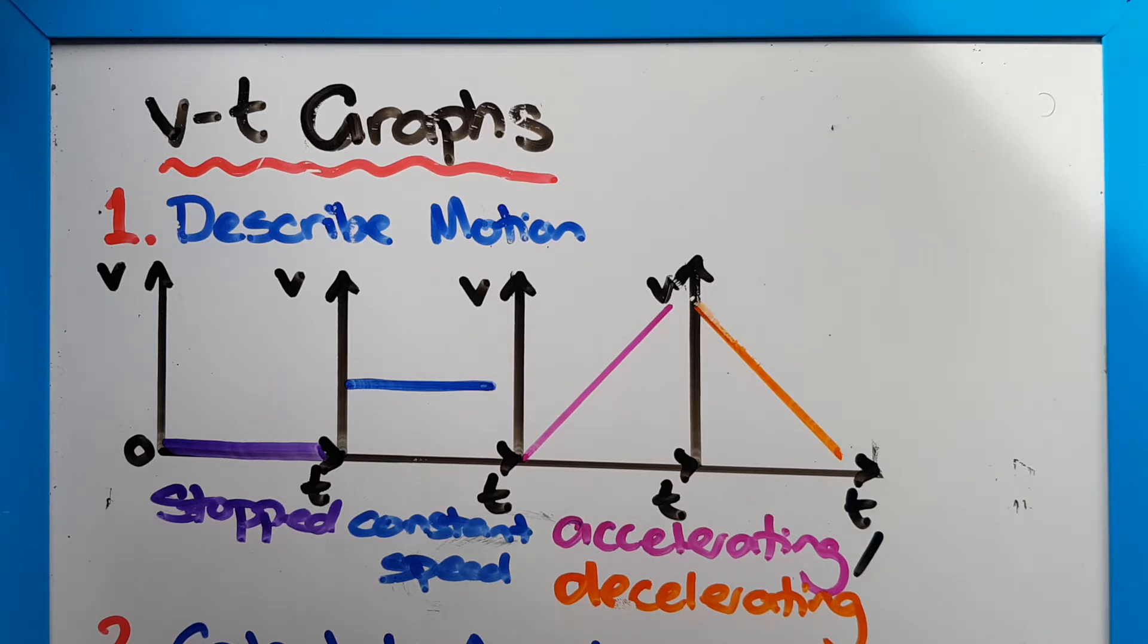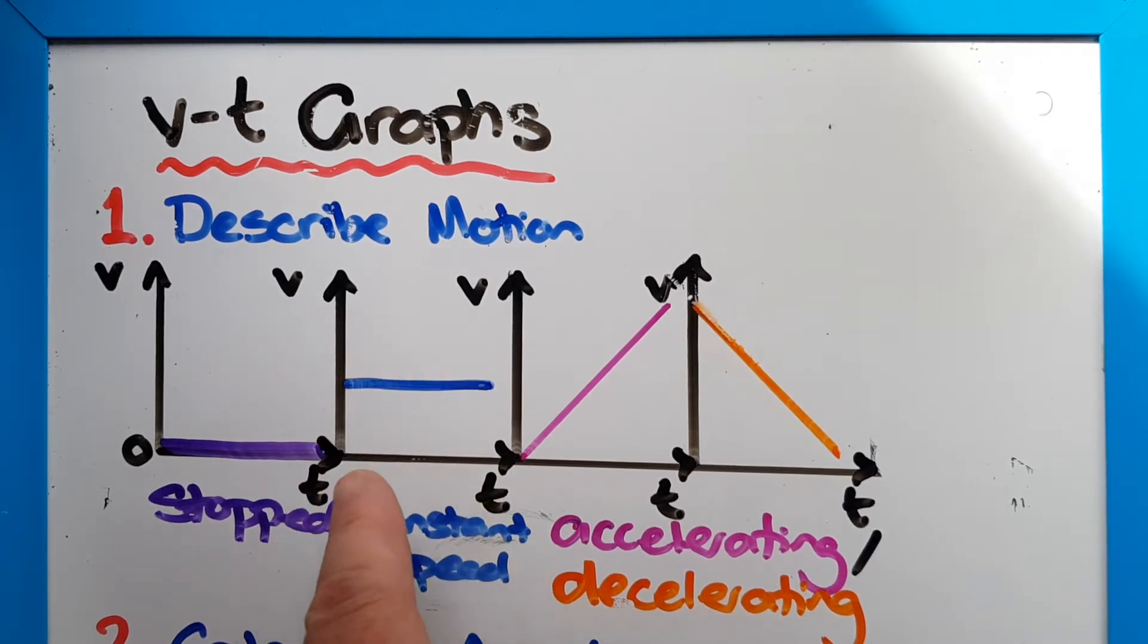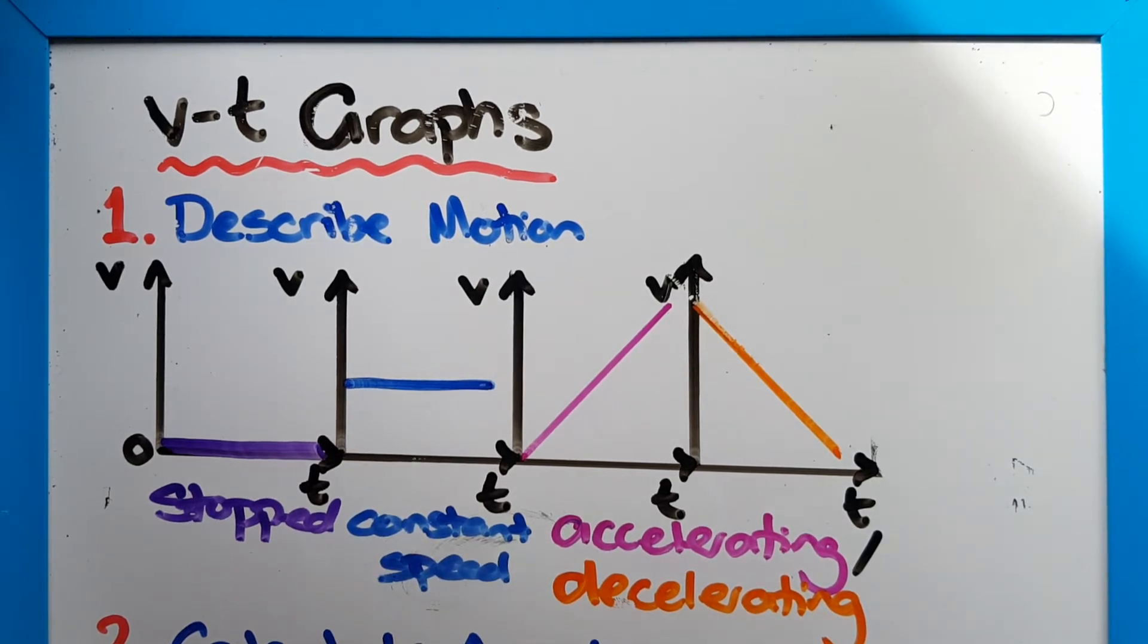So we normally have speed on our y-axis, the up and down, and our time on the x-axis, so across. If we see that the line is along the x-axis it means there is no speed, so we describe that motion as stopped or stationary. If it's parallel to the x-axis but above it, then it's a constant speed - that value for speed is not changing.